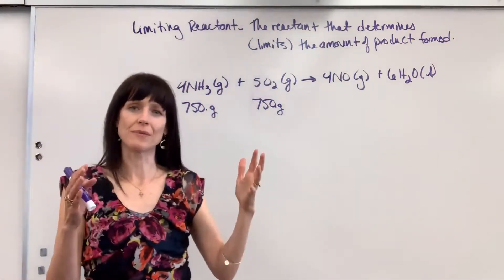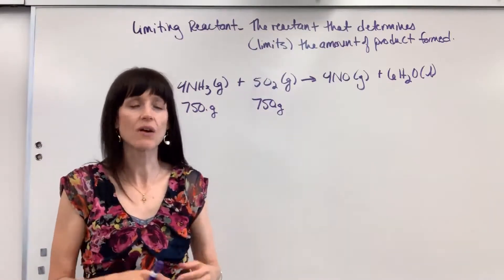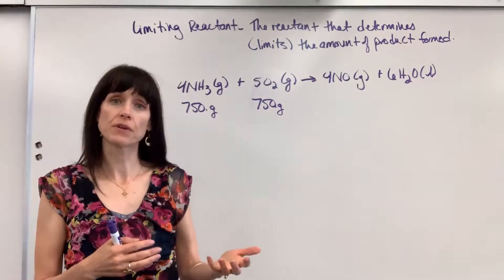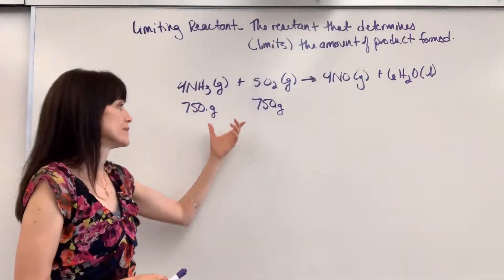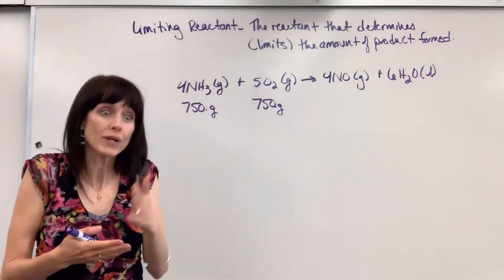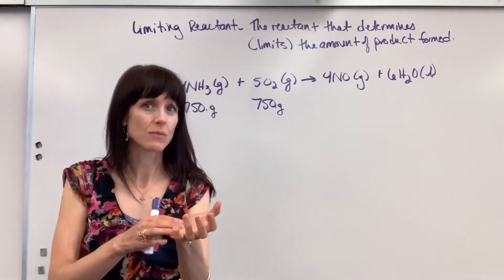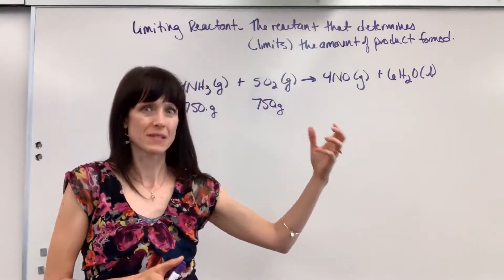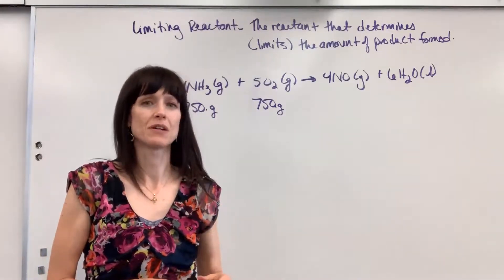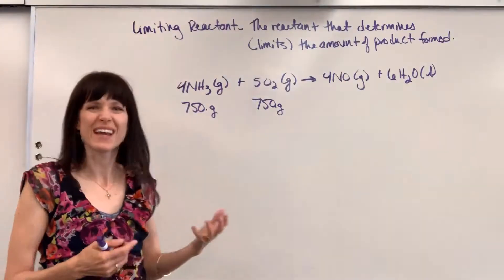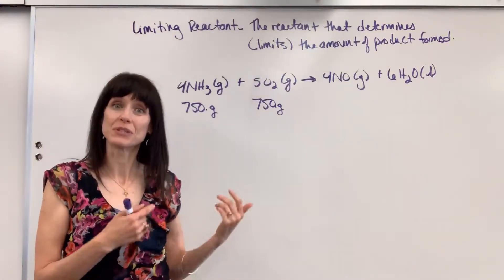So you have to do stoichiometry. You have to bring these to moles so that we're comparing apples to apples. We're going to do the stoichiometry that you learned in the last video and we're just taking a step further where we're comparing the two reactants to see which one really is the smallest amount when it comes to moles and it will produce the smallest. It will form the smallest amount of products. Just like the eggs was our limiting reactant. Which reactant?